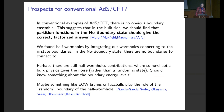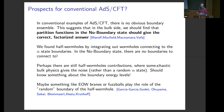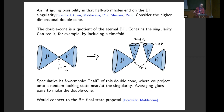I'm going to end with a couple of comments about prospects for conventional AdS/CFT. In conventional examples of AdS/CFT, there's no obvious boundary ensemble. This suggests that in the bulk, partition functions in the no-boundary state should give the correct factorized answer. In these models we studied, we found half wormholes by integrating out wormholes connected to the alpha-state boundaries. In the no-boundary state, there are no boundaries to connect to — so where do we get the half wormhole? Perhaps there are still half wormhole contributions, or some chaotic bulk physics gives noise rather than some random alpha state. This chaotic bulk physics should know something about the boundary energy levels. There are some speculations about half wormholes involving end-of-the-world branes or fuzzballs.